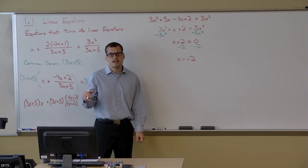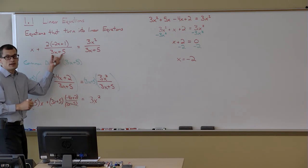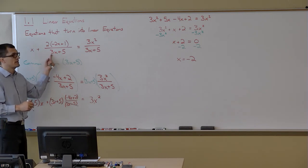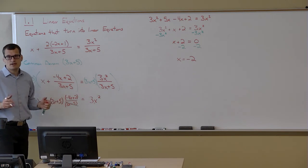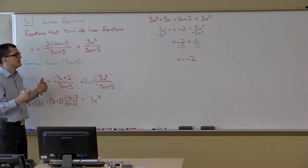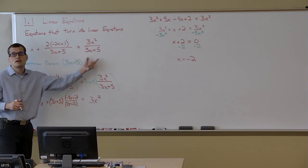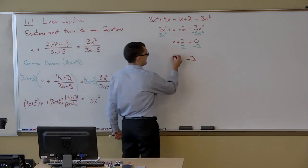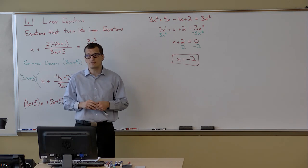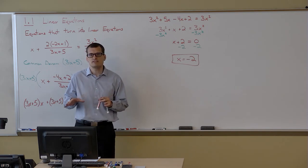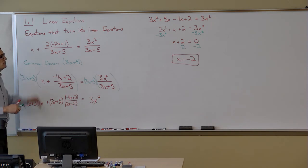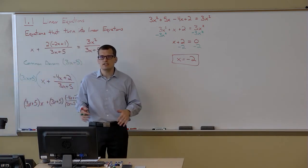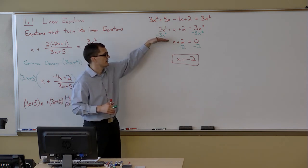I always want to check that I'm not dividing by 0. If I plug in negative 2 for x, then 3 times negative 2 plus 5 gives me negative 1. So I'm dividing by negative 1 — that's fine. I check that I'm not dividing by 0 in my original equation, and I'm not, so that is my final answer. You can see that sometimes these rational equations have a pretty elaborate simplifying process, but eventually those rational equations simplify to something that looks like a linear equation.